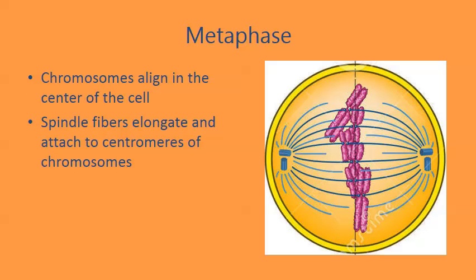In metaphase, the condensed chromosomes line up in the center of the cell along the central axis. Spindle fibers come off the centrioles and attach to the kinetochore near the middle of each chromosome. This allows the spindle fibers to pull apart the chromosomes into their sister chromatids. A quick way to remember metaphase is that metaphase results in chromosomes in the middle — metaphase equals middle.